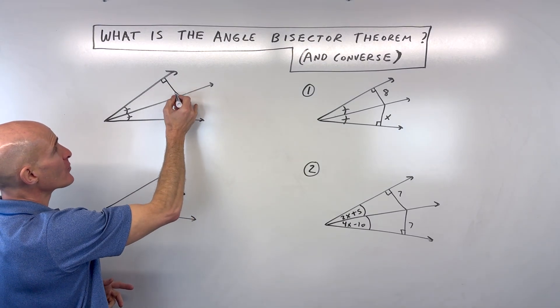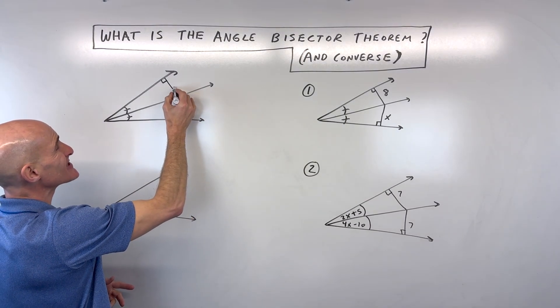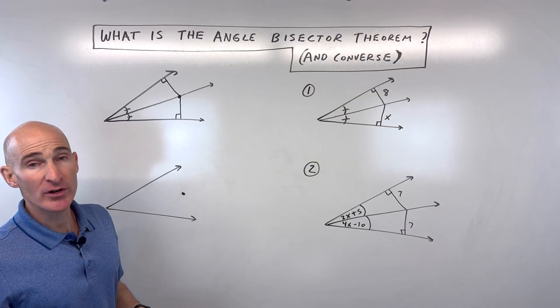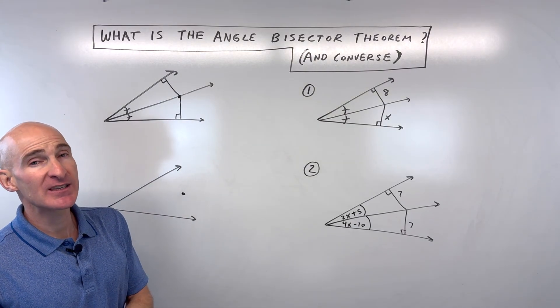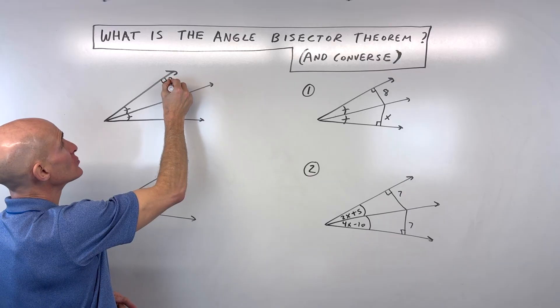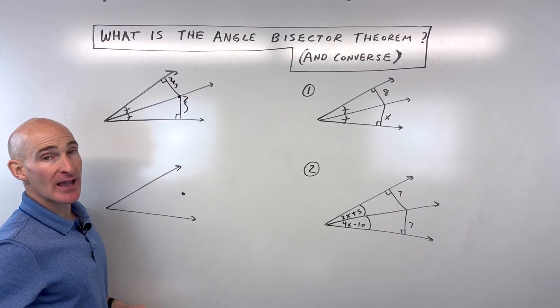And what happens is when you draw that perpendicular distance, these two distances are going to be congruent to one another. Now you might be saying, Mario, why are these two distances the same? Why does that work?